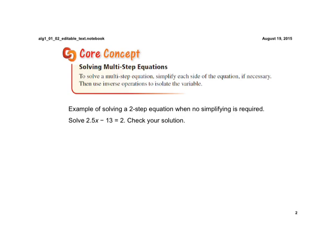If we look at the example that we're presented with here, which is 2.5x minus 13 is equal to 2, each side is already in simplest form. The left side, those are not like terms, because the first term has a variable with it, and the second term does not. And on the right side, it's just a number.